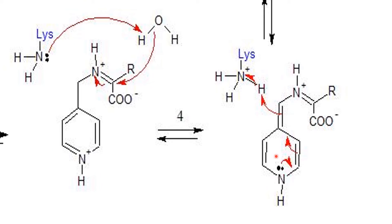As a result we form the quinonoid intermediate, which resembles a quinone — that's why it's called a quinonoid structure. The electrons that fell into the electron sink are then kicked back out of the ring, leaving at what I'll call the central carbon. That electron attacks a hydrogen from the protonated lysine residue, and the electrons from this hydrogen move to reform a lone pair on the lysine nitrogen.